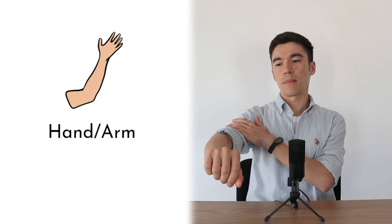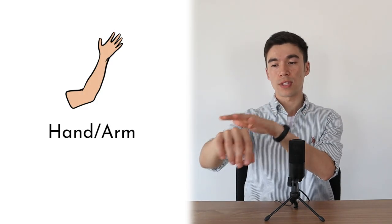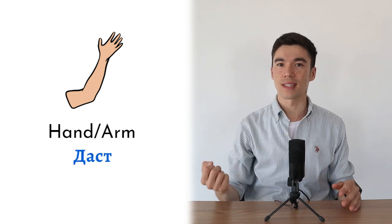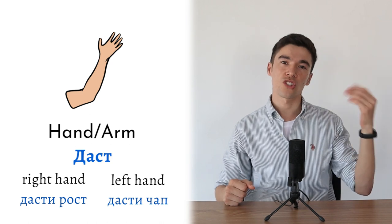Next one is arm and hand. For both of these words we just have one word. Dust. So dusty roast, dusty chop.